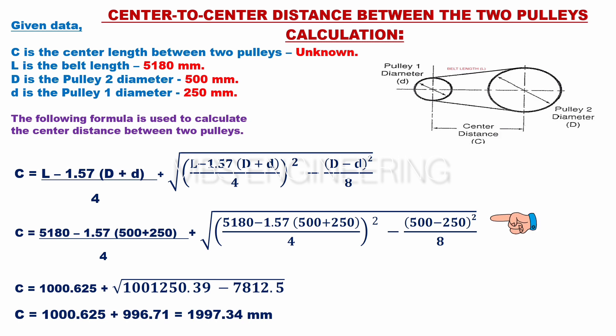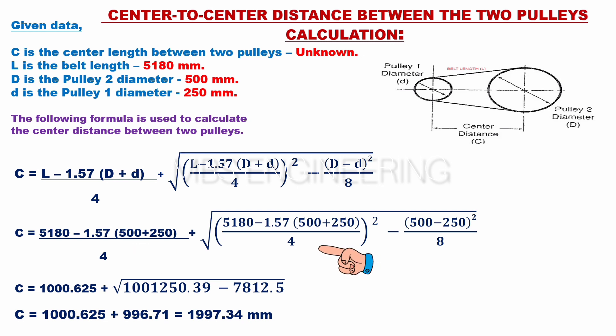To calculate the center distance between two pulleys, we need to apply the given data to the equation. Next, C equals 5,180 minus 1.57 multiplied by 500 plus 250, and the obtained value divided by 4, plus the square root of 5,180 minus 1.57 multiplied by 500 plus 250, and the obtained value divided by 4, and the further obtained value divided by 8.